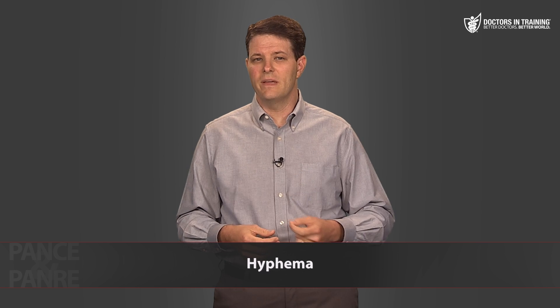A hyphema occurs when trauma to the eye or eye surgery results in blood pooling in the anterior chamber — behind the cornea but in front of the iris. It can usually be managed with pain control and dilation of the pupil, but sometimes surgery is needed to drain the blood.